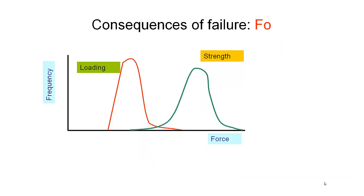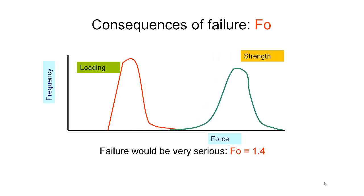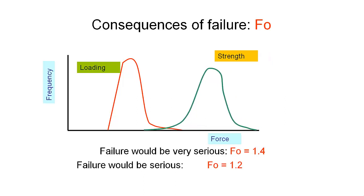So the first one is consequences of failure. In cases where the failure would be very serious then we want to have a big factor. So Fo is equal to 1.4. This is for cases where people might potentially be killed or injured by the failure of these devices. So that should hopefully ensure that the risk of the strength being lower than the loading condition is very small. Where failure would be serious, so potential maybe for personal injury, we would expect an Fo of maybe 1.2. So a little bit more overlap tolerated.